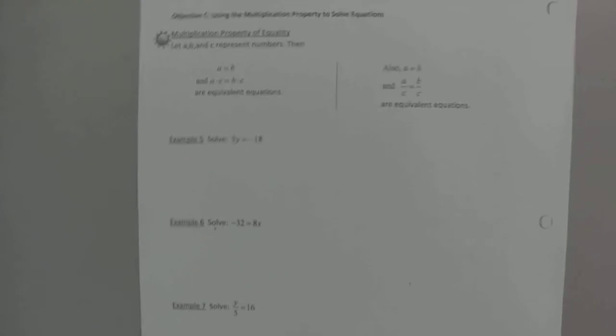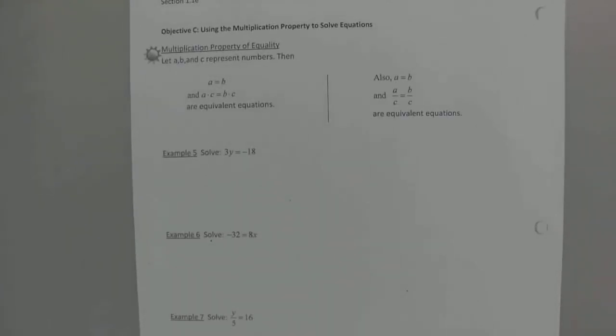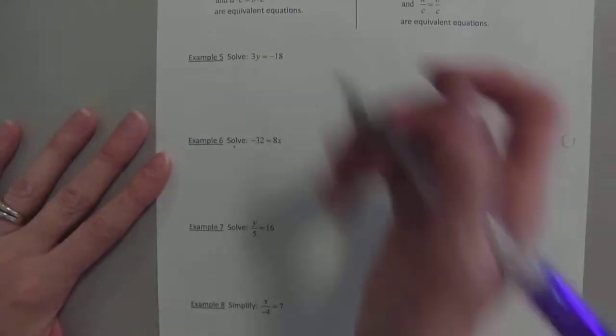So then if we know how to add or subtract, multiplication is kind of the same idea. If we have two things that are equal, multiplying by one side and as long as you do it on the other, keeps them equal. Same thing with division.